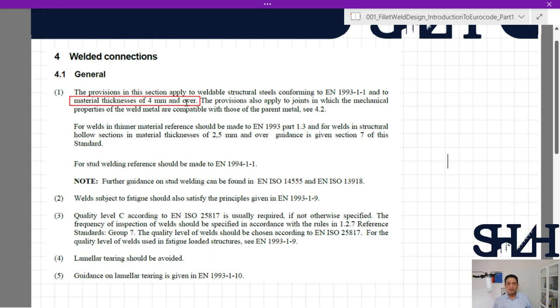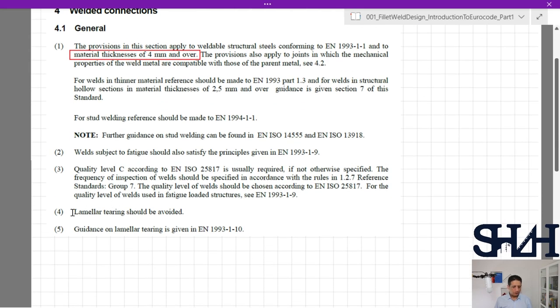If you want to use thinner material, there are some other ways that you can read from the code. For welds in thinner materials, reference should be made to EN 1993 Part 1-3. For welds in structural hollow sections in material thickness of 2.5 millimeters and over, guidance is given in Section 4 of this assignment.